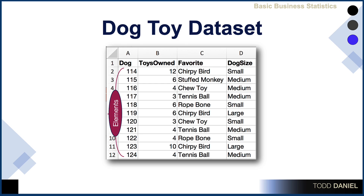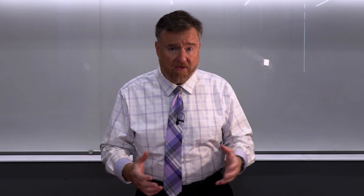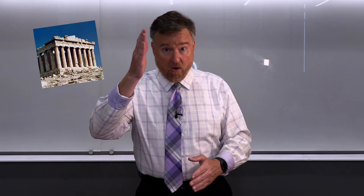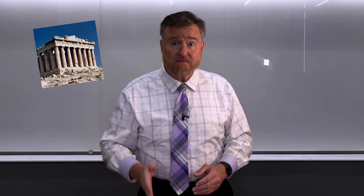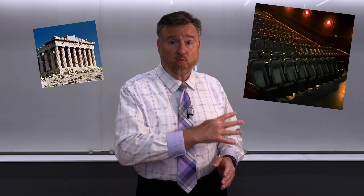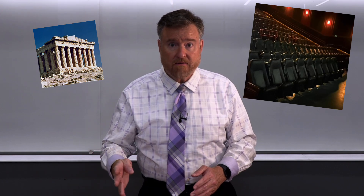The variables will be placed in columns. You can remember the difference between rows and columns by thinking of, for instance, Greek columns in the Parthenon — they go up and down. Columns go up and down. Rows move across.